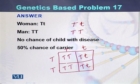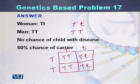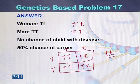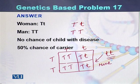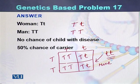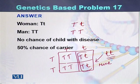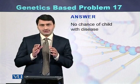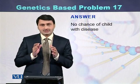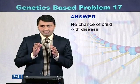Based on this information, there is no chance of a child with the disease because the disease is recessive — a recessive disease requires both recessive alleles. None of the genotypes in the Punnett square have two recessive alleles. So there is no chance of a child with the disease, although there is a 50% chance of carriers — two individuals who are heterozygous and carriers of this disease.